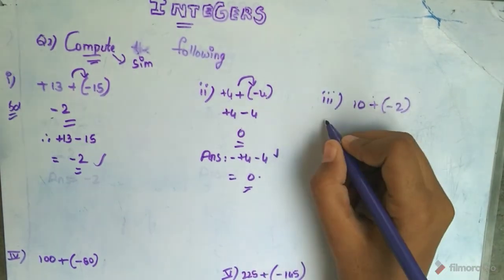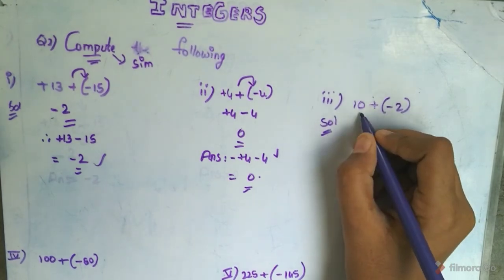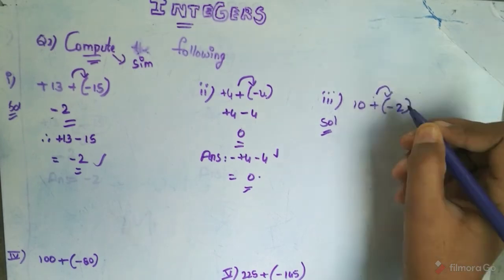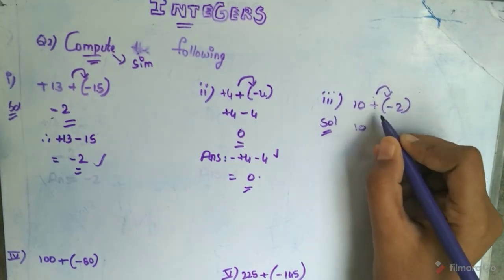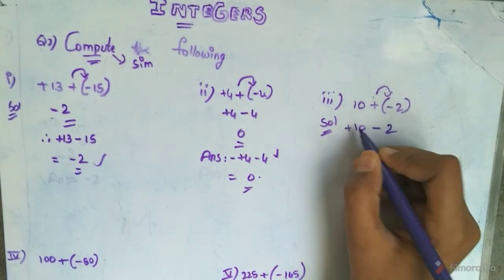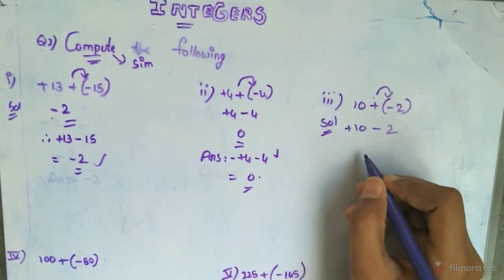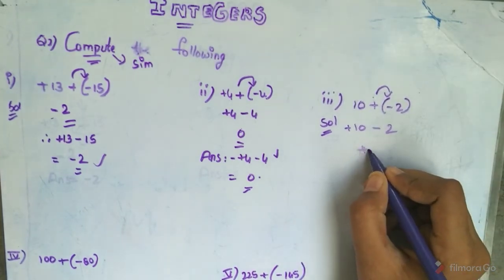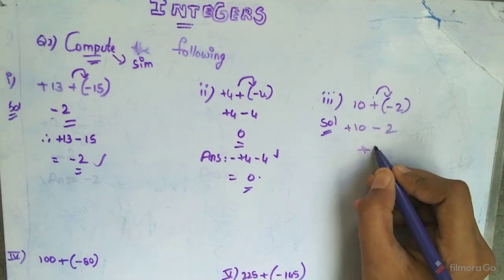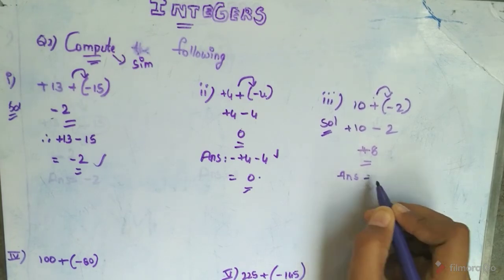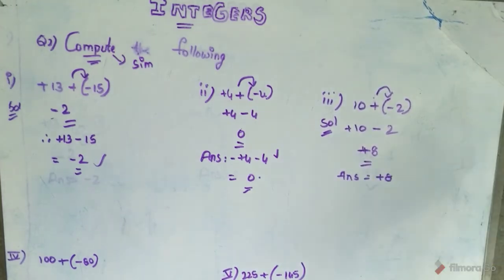The third Roman question is: 10 plus of minus 2. Plus of minus equals minus. The largest number is 10, which is plus. So 10 minus 2 is equal to 8. The answer is plus 8.